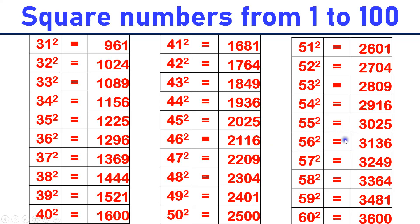56 square is equal to 3,136. 57 square is equal to 3,249. 58 square is equal to 3,364. 59 square is equal to 3,481. 60 square is equal to 3,600.